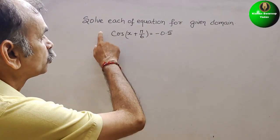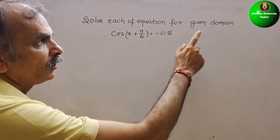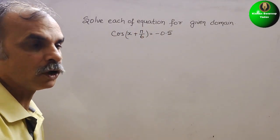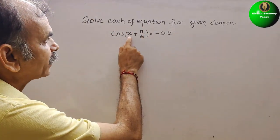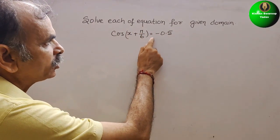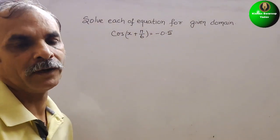Your question is solve each equation for given domain. See that what they have given: cos(x + π/6) = -0.5.